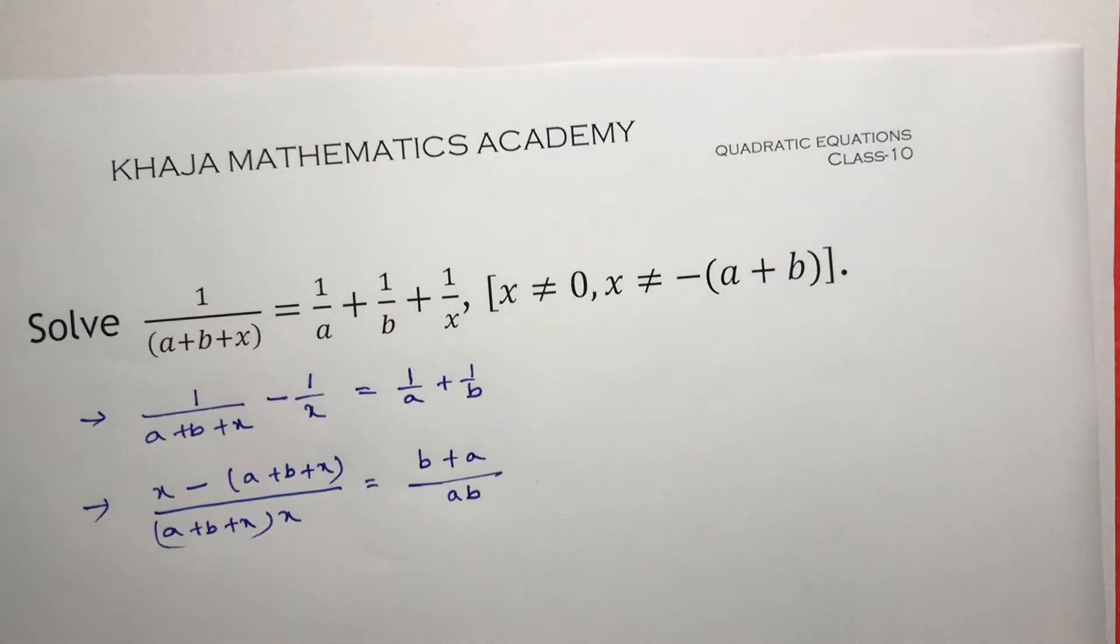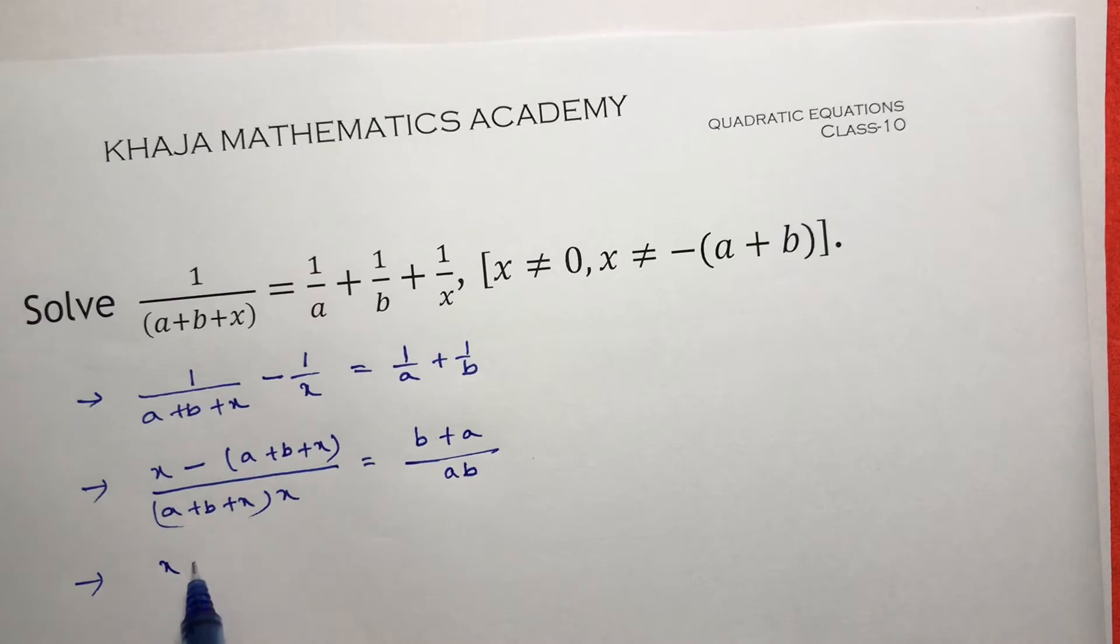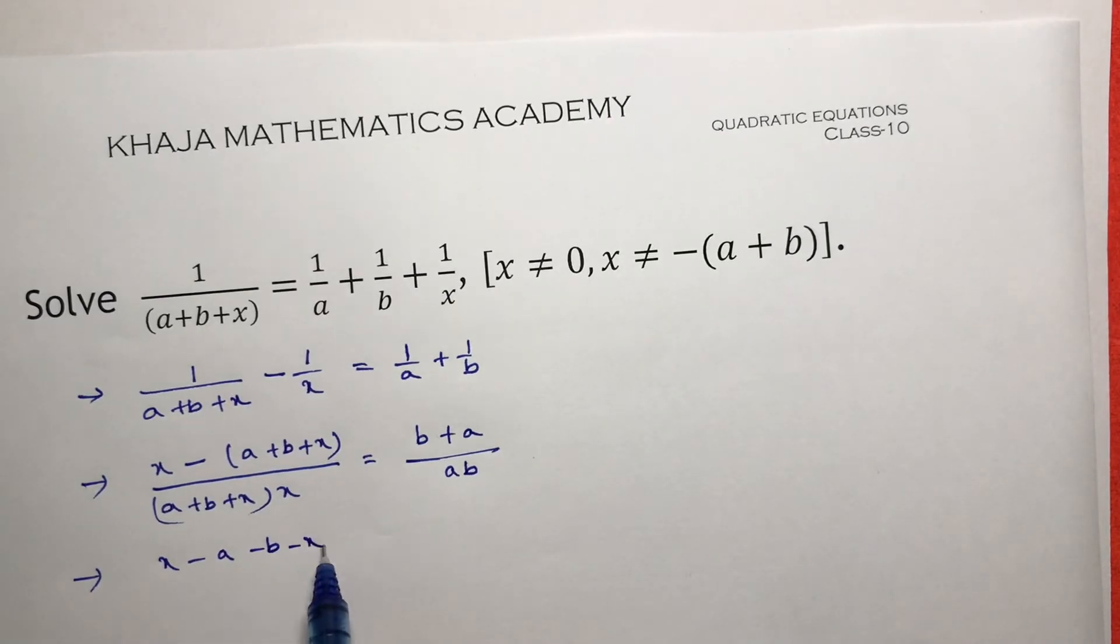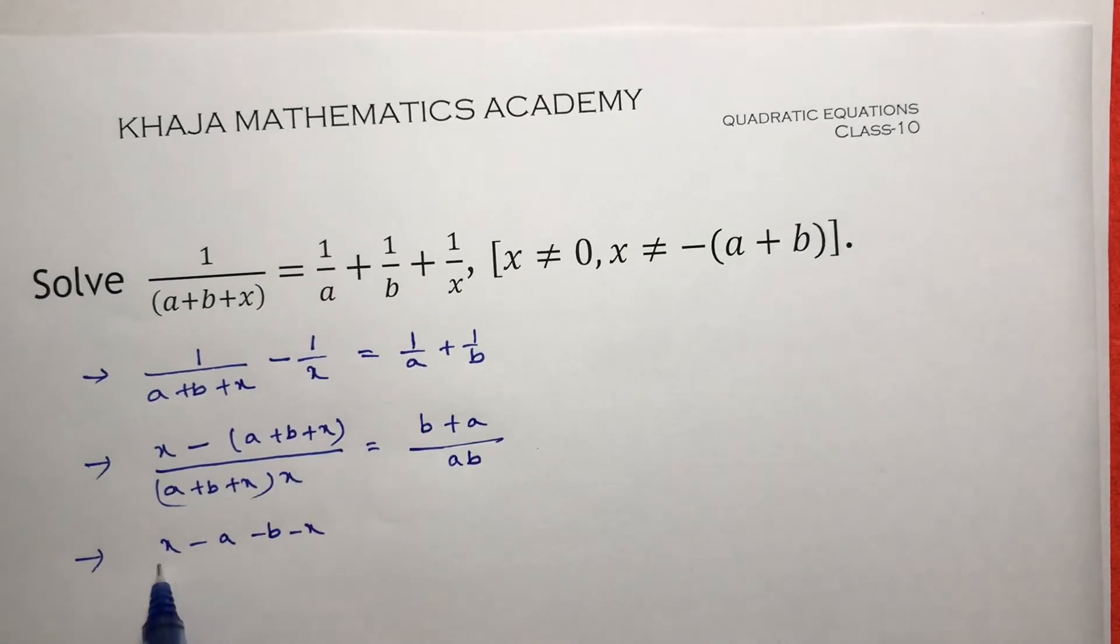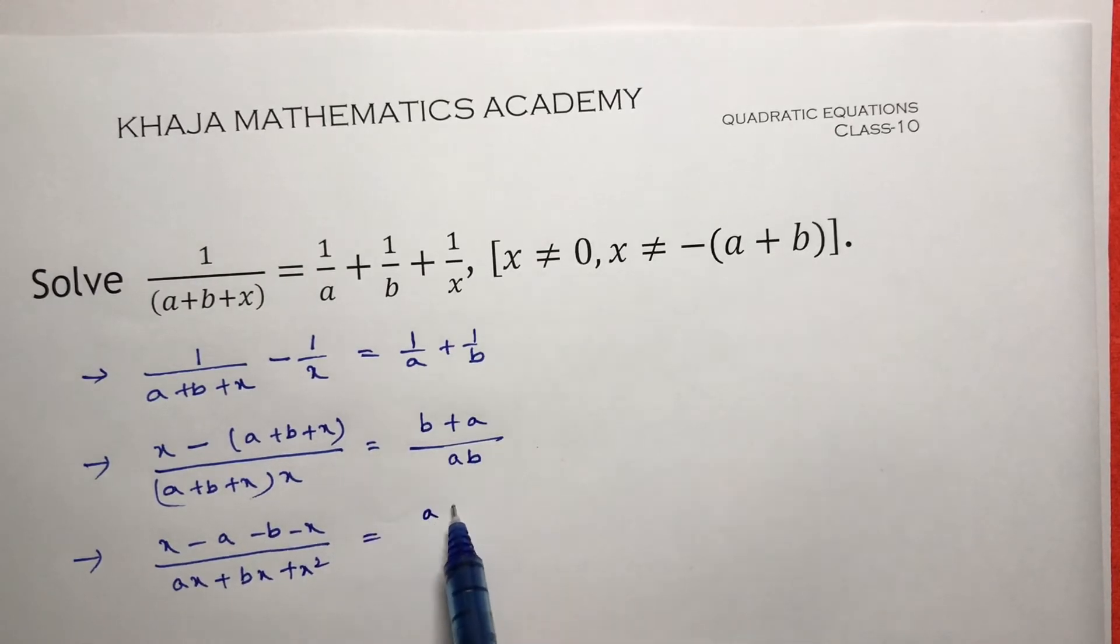Next step: x minus a minus b minus x by, if I multiply ax plus bx plus x squared equals, you can write as a plus b by ab.